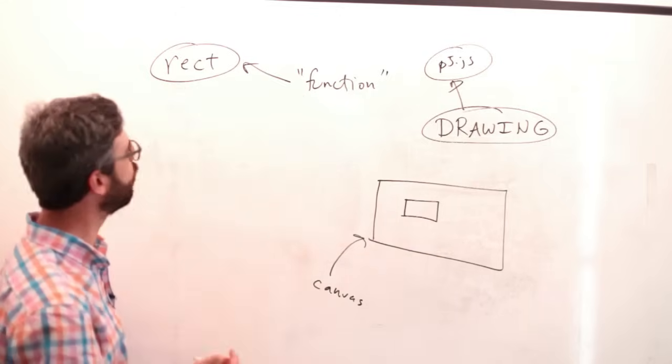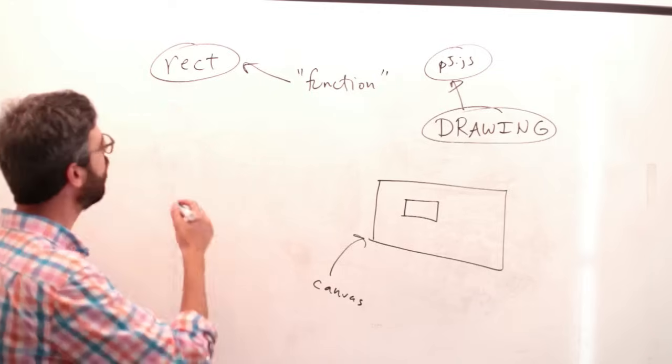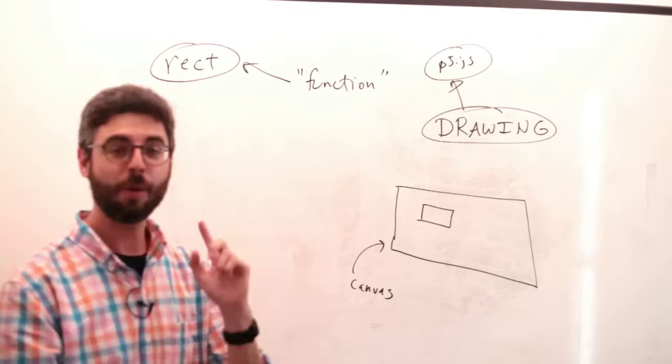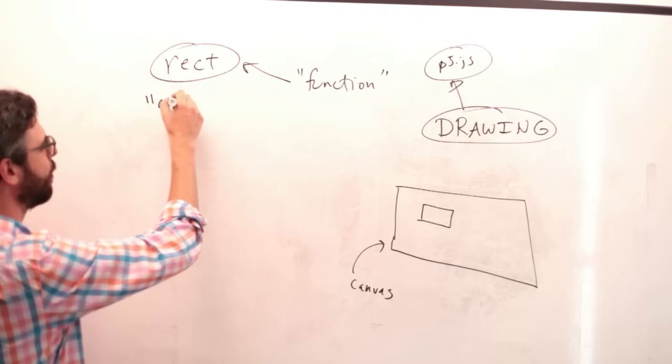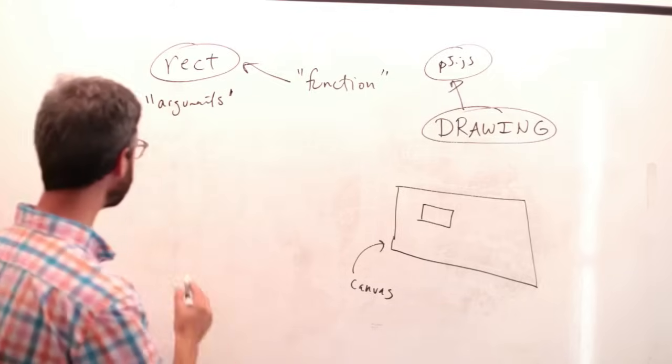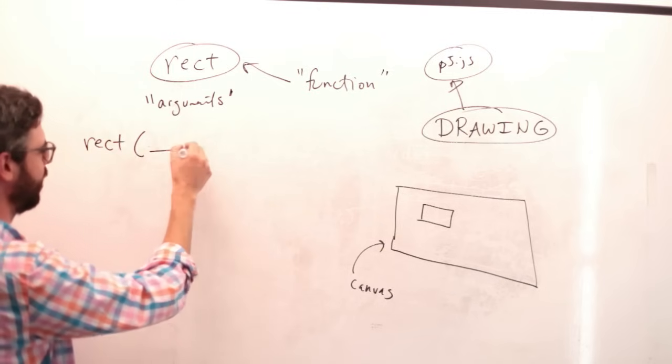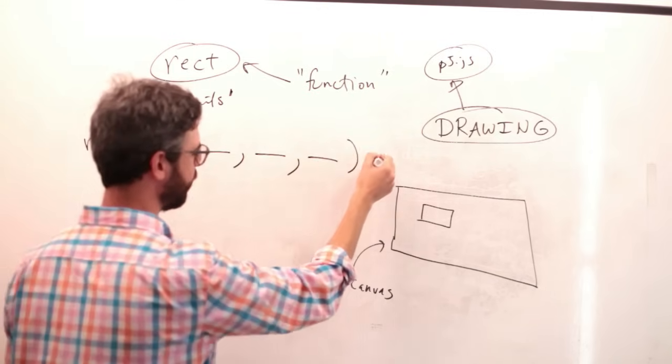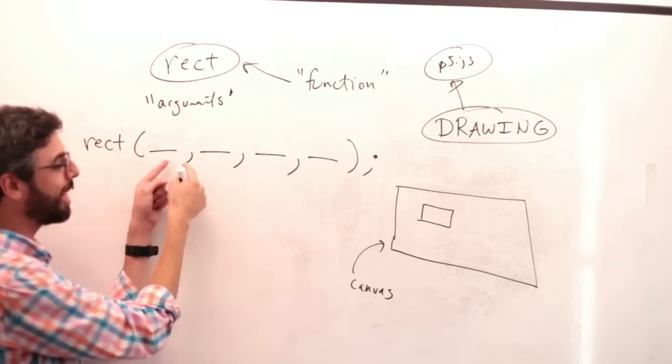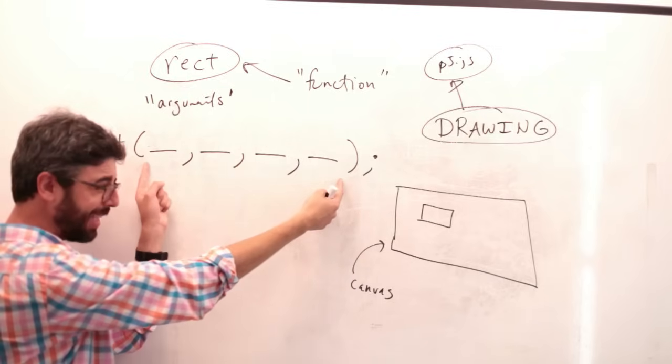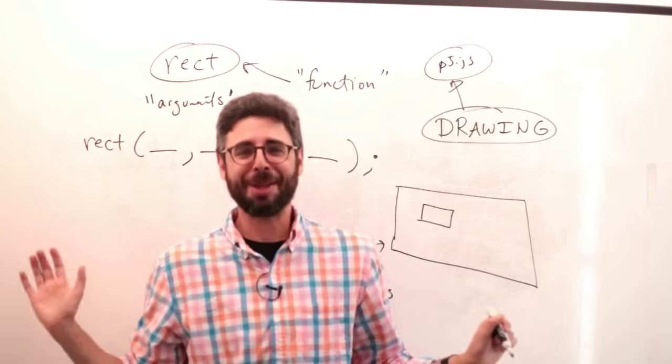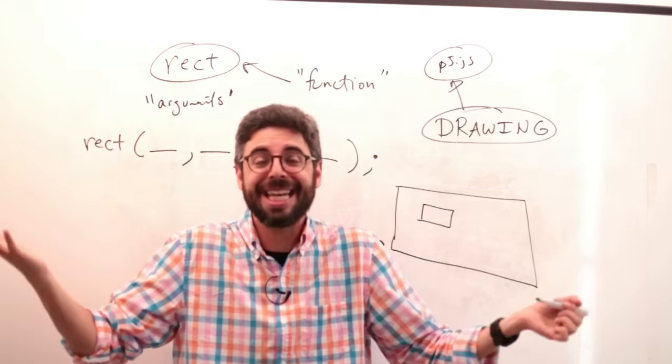However, in the canvas, it will not because I need to say where it should go and how big it should be. So how do we tell the computer how to draw that rectangle? So the way that that happens is through the use of something called arguments. So when I issue this command, rect, i.e. draw a rectangle, I also have to specify some arguments. And the arguments to that rectangle, they come in the form of numbers and are separated by commas and enclosed in parentheses with the line being ended by a semicolon.